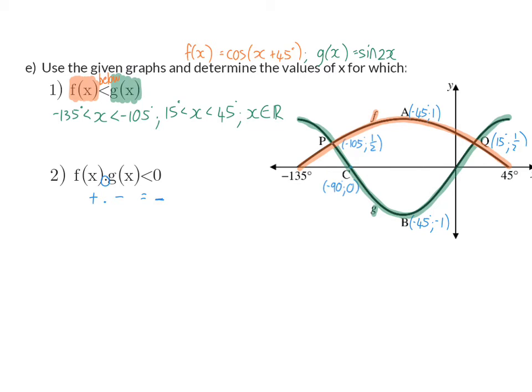So, for this, our intervals will be determined by x-intercepts. So, we're going to start off at minus 135. Our next x-intercept is at C, minus 90. Our next intercept is at zero degrees, and then again at 45.